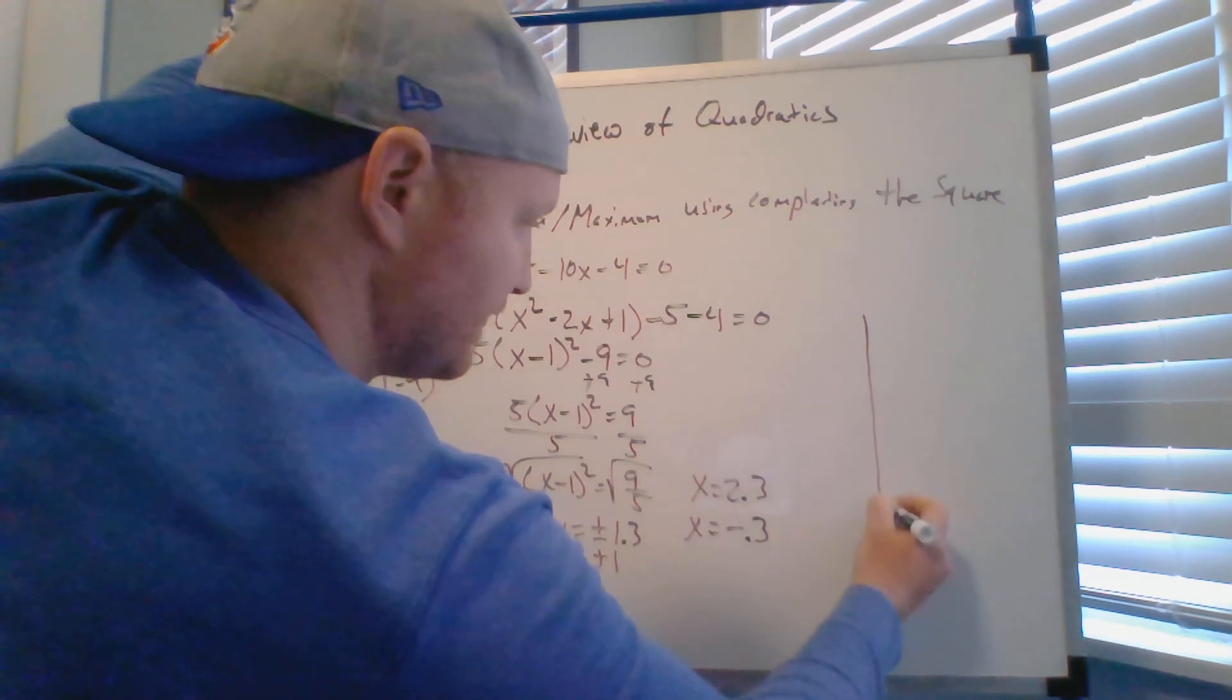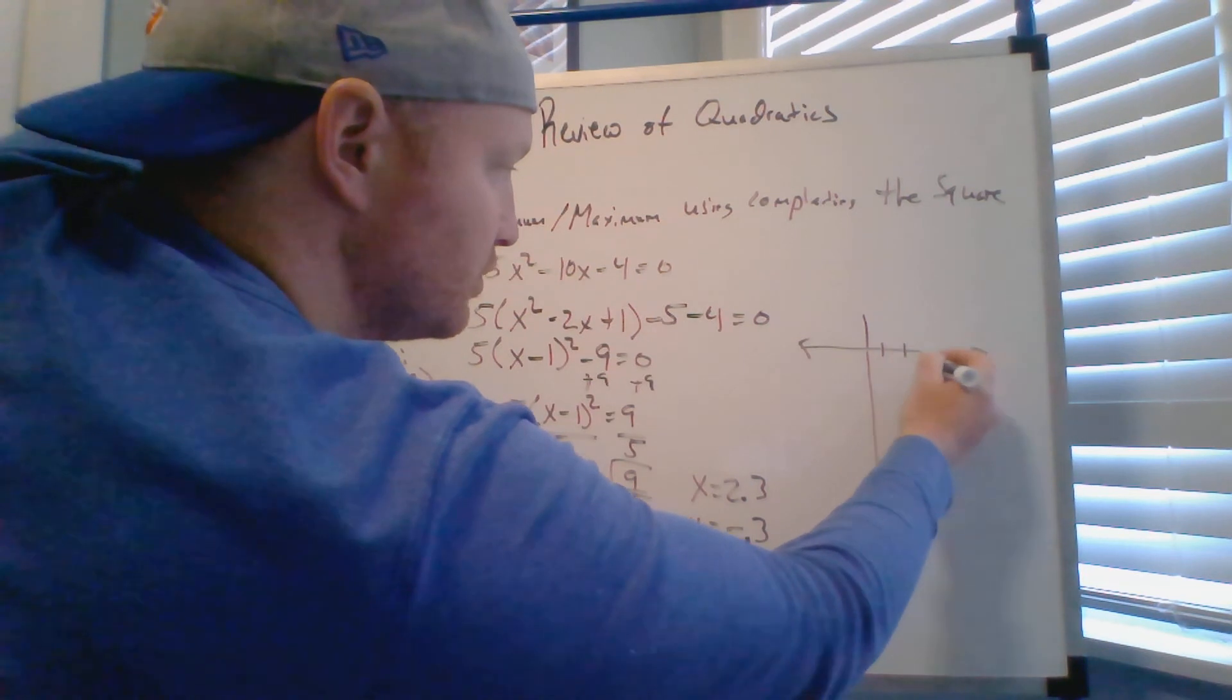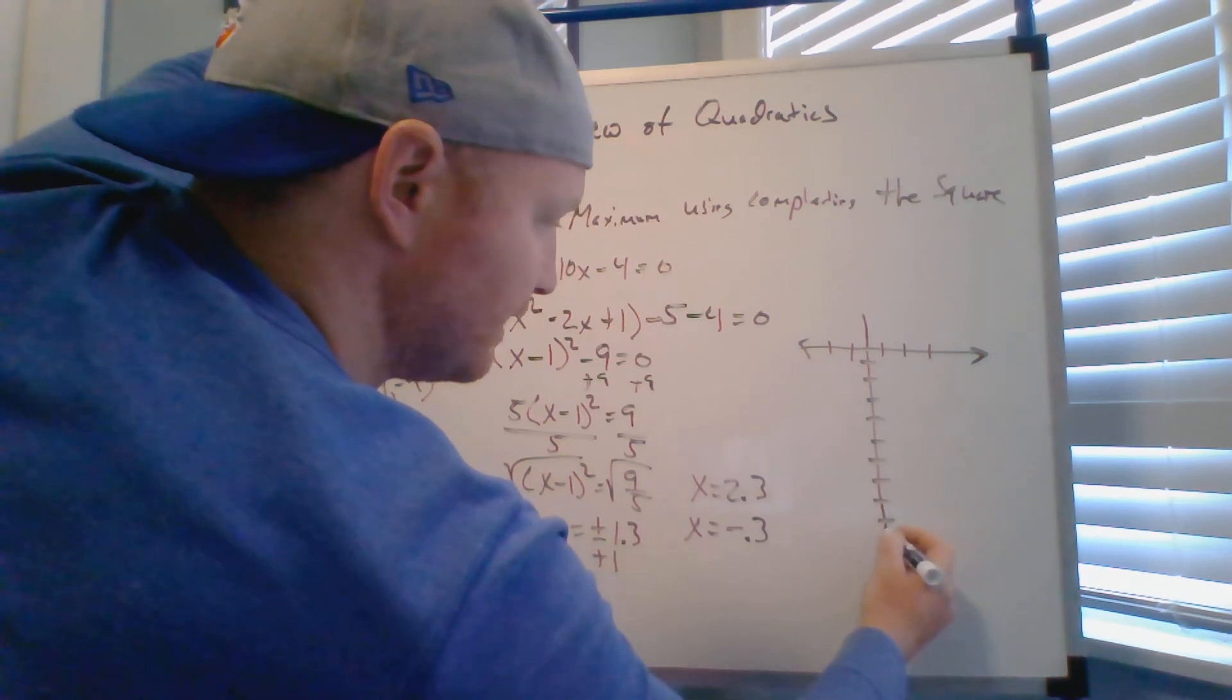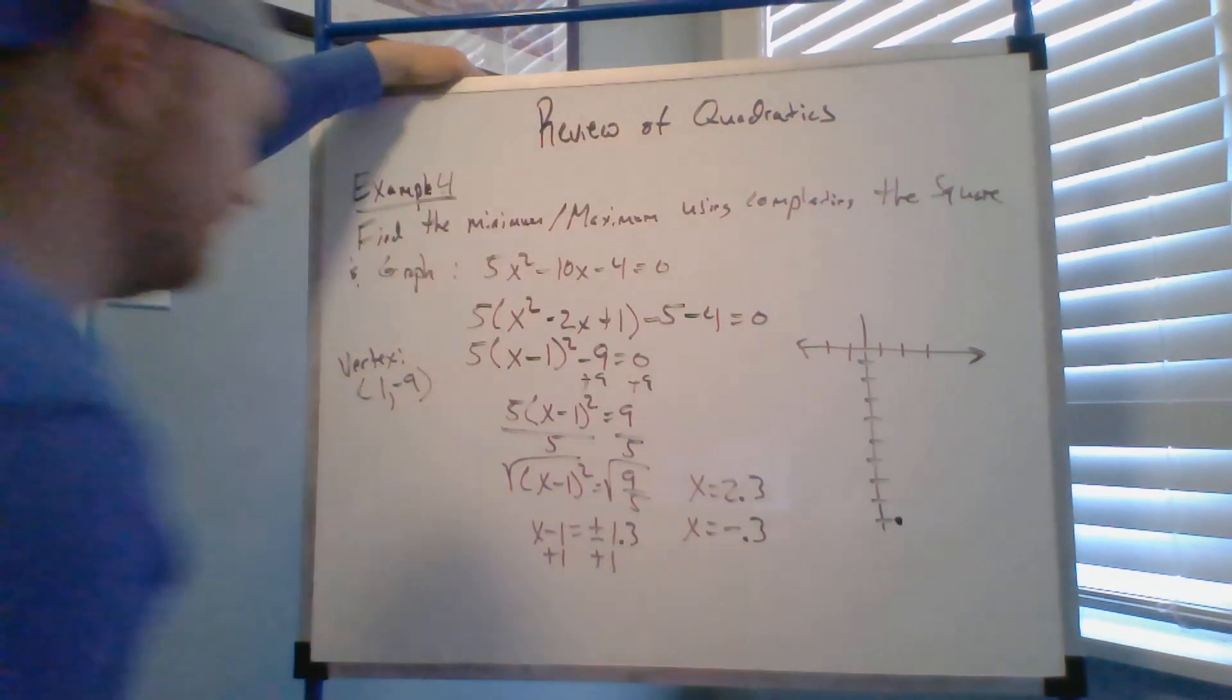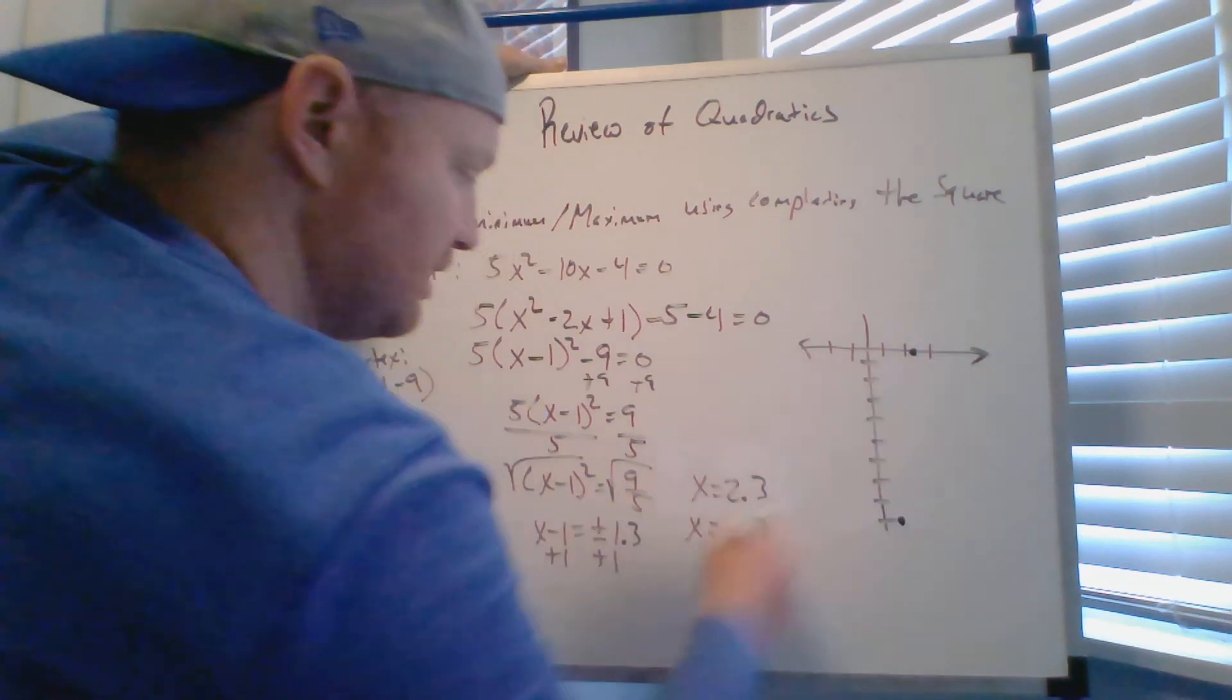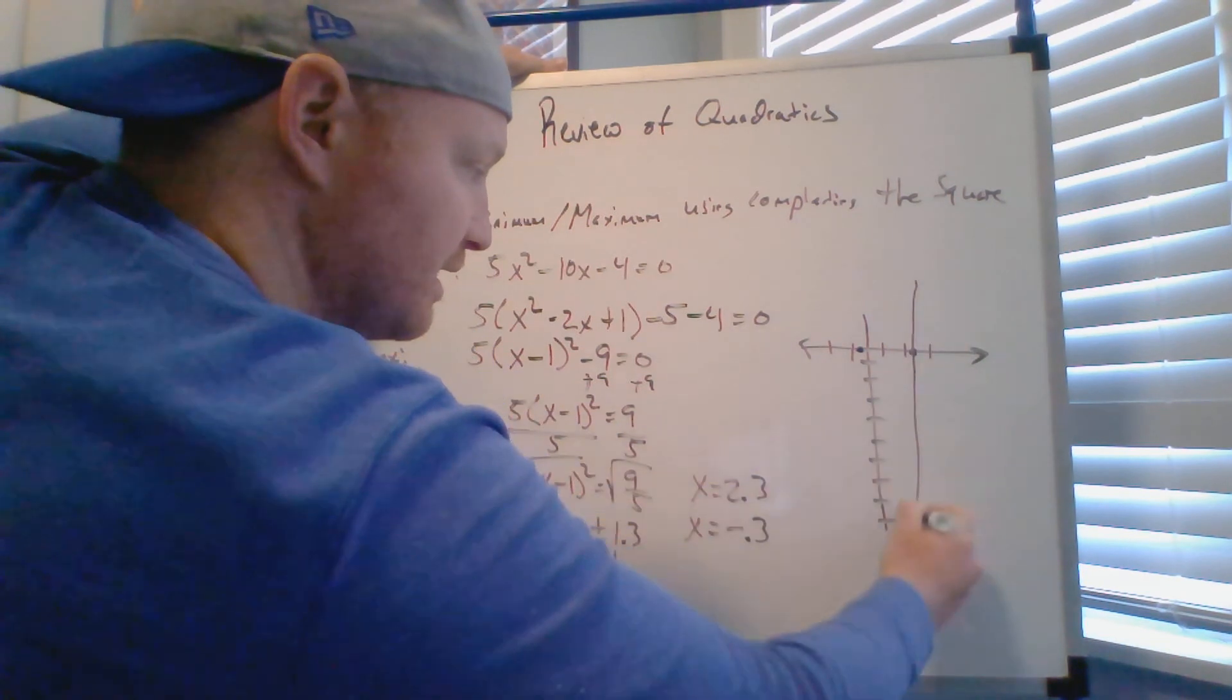I have enough points to now graph my quadratic function. One two three, one two, one two three four five six seven eight nine. So my vertex was at one negative nine. My x-intercept is at two point three, so that's right about there, and negative point three, let's call that right about there. That's good enough, this is just getting us into habits.